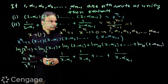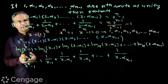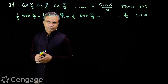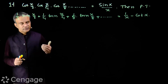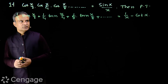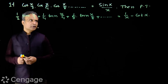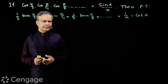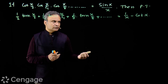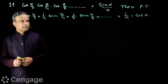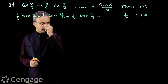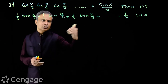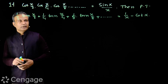Now we have a problem combining trigonometry and calculus. If cos(x/2)·cos(x/4)·cos(x/8)·... (infinite factors following this trend) equals sin(x)/x, then prove that 1/2·tan(x/2) + 1/4·tan(x/4) + 1/8·tan(x/8) + ... = 1/x - cot(x). Here we have a product on the left and a sum on the right, so to move from product to sum we use logarithm.